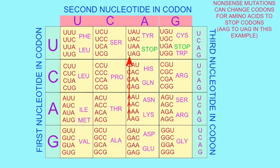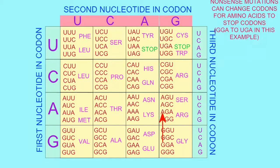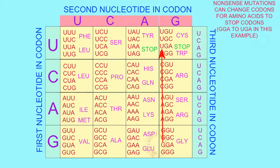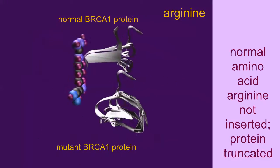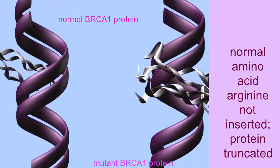A nonsense mutation converts a codon, which normally encodes an amino acid, to a stop codon. This will make a protein which is shorter than normal.